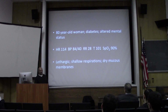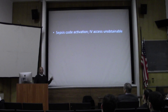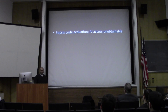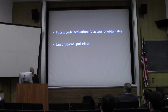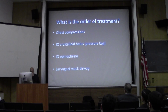Okay, so what are you going to do? You call an internal sepsis code, get all your resources there. Nursing immediately tells you they can't get an IV, so you go over to see the patient, and the patient is now unconscious and pulseless. You look up on the monitor and you see this. So what's your order of treatment? What is this rhythm? PEA, right?